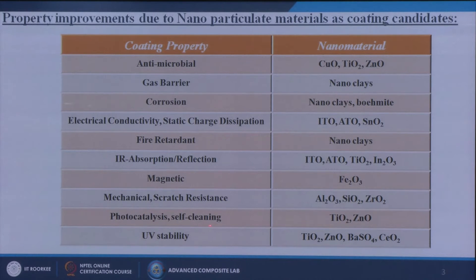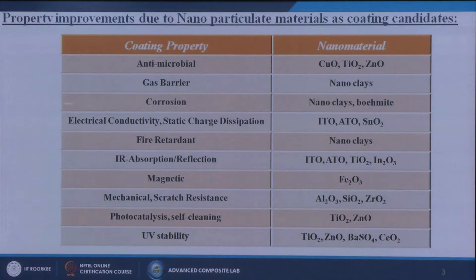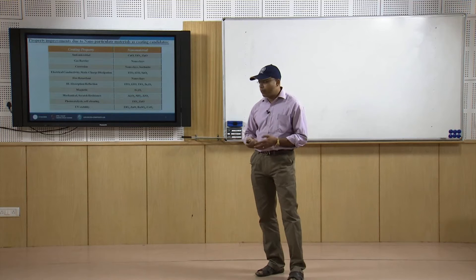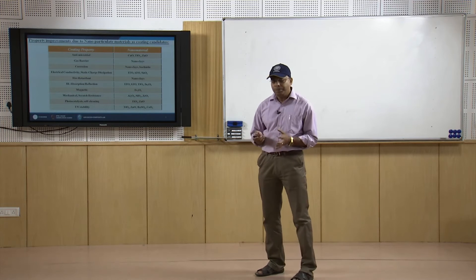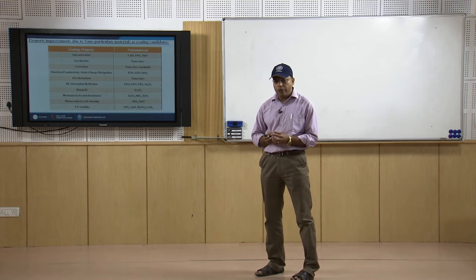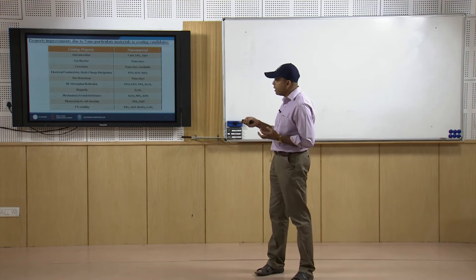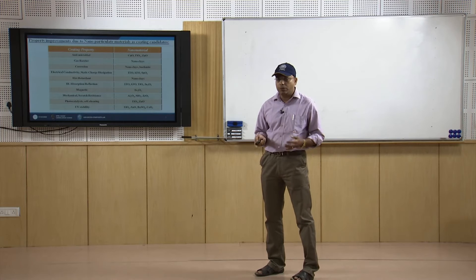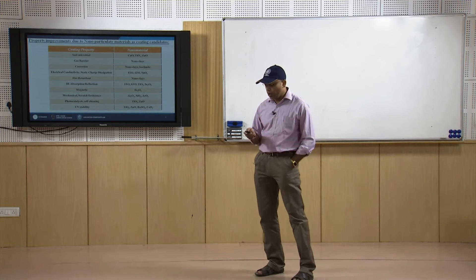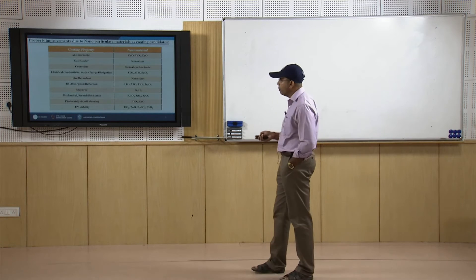For photocatalysis and self-cleaning properties we can use TiO2 and zinc oxide. For UV stability we can use TiO2, zinc oxide, barium sulfate, or CeO2. From this chart we can see that using these kinds of materials, these properties can be changed for a particular substrate or material.